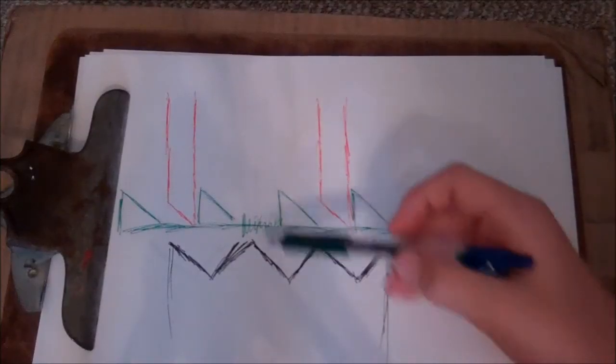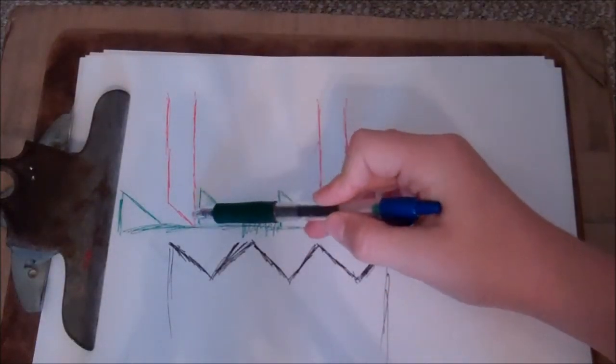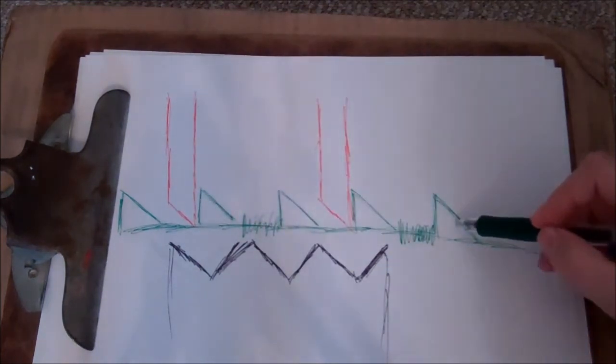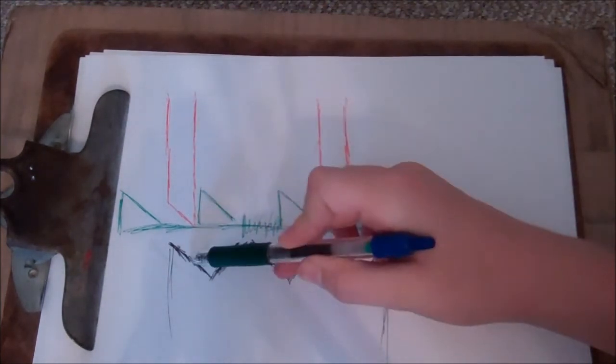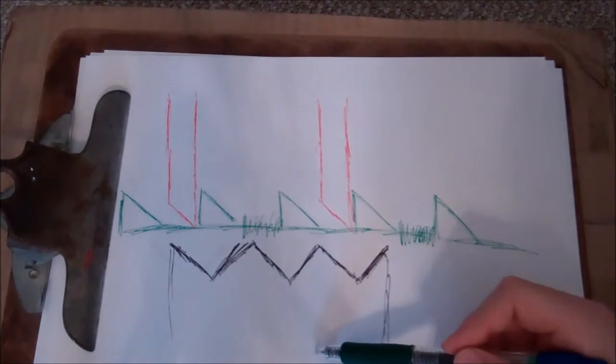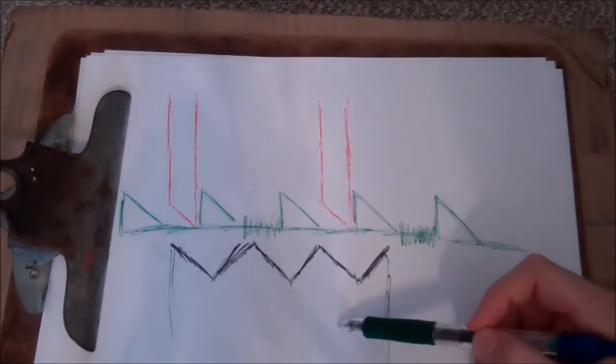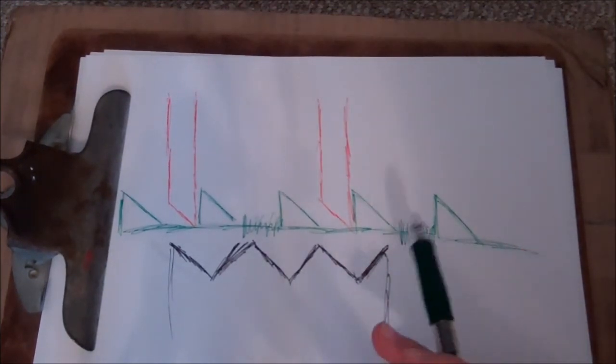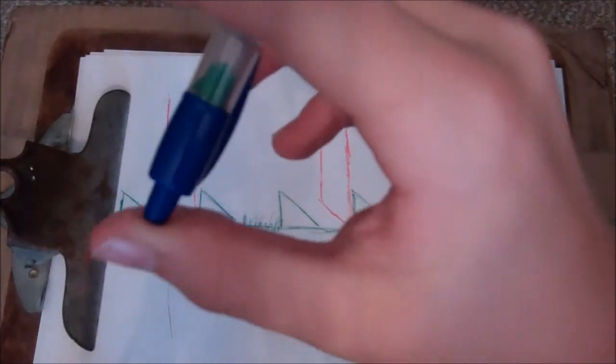But for that to happen, this needs to have some force going to the right this way, or else it'll just go up and then back down. That's where the black thing comes in. The black thing right here is the thing that you actually push.